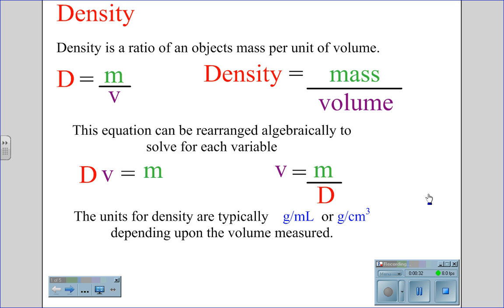The units for density are typically grams per milliliter or grams per centimeters cubed, depending upon the volume measured.